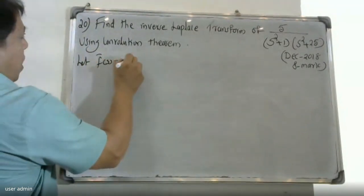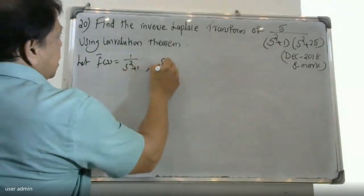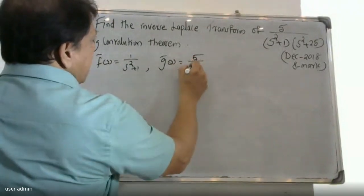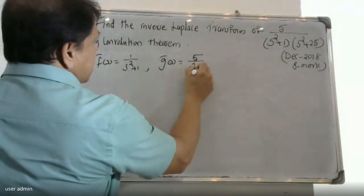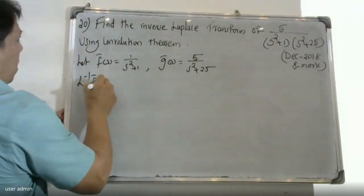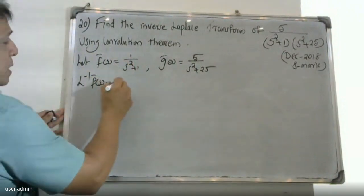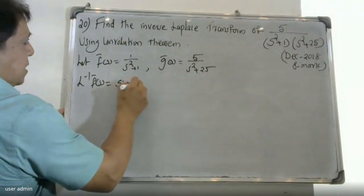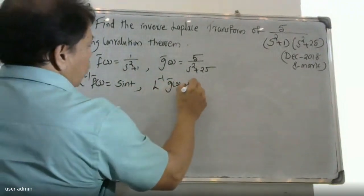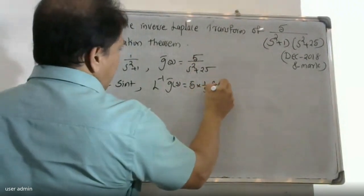Let F̄ be equal to 1 by (s+1), and Ḡ be equal to 5 divided by (s+25). Then L inverse of F̄ is equal to L inverse of 1 by (s+1), which gives sin(t). L inverse of Ḡ is equal to 5 into 1 by 5, which gives sin(5t).